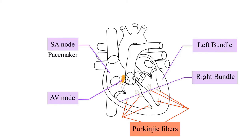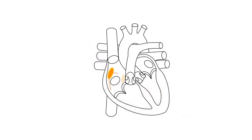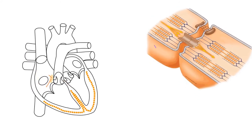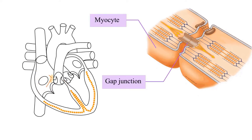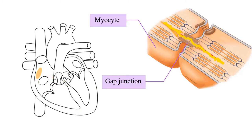This smooth flow of electrical current through the heart is possible due to membrane proteins known as gap junctions. Contractile cells of the heart, known as myocytes, are linked together by gap junctions that have an opening so the contents of the cytoplasm of one cell can travel to the neighboring cell. As a result, an action potential, or electrical current, is able to be spread from one cell to the neighboring cell through the gap junctions.